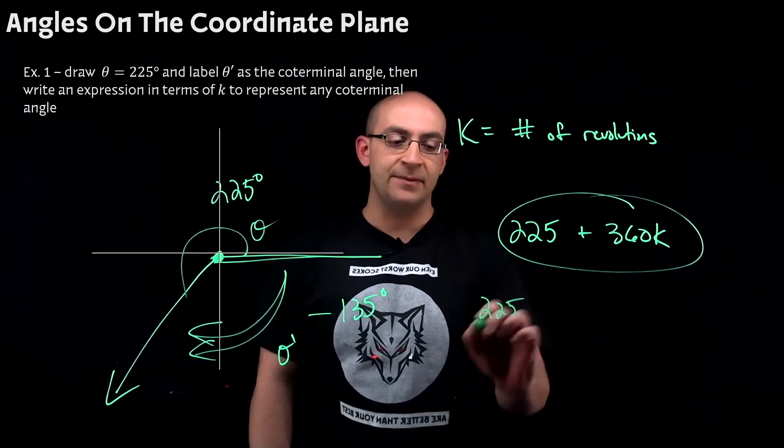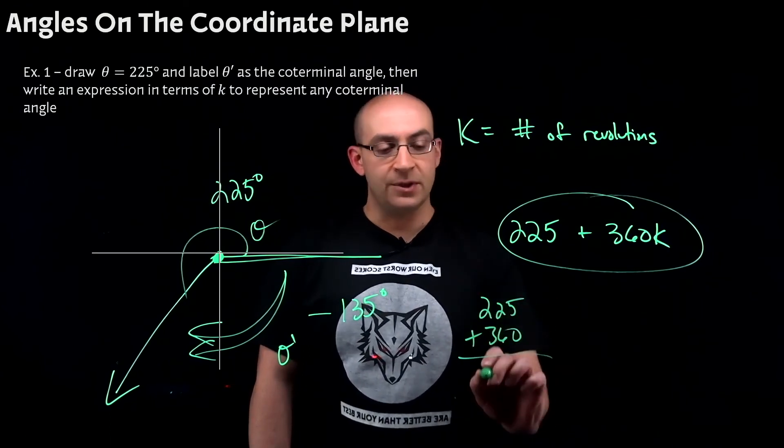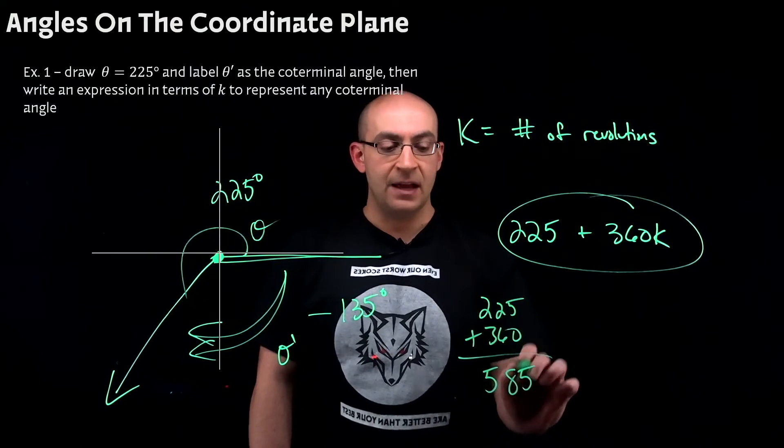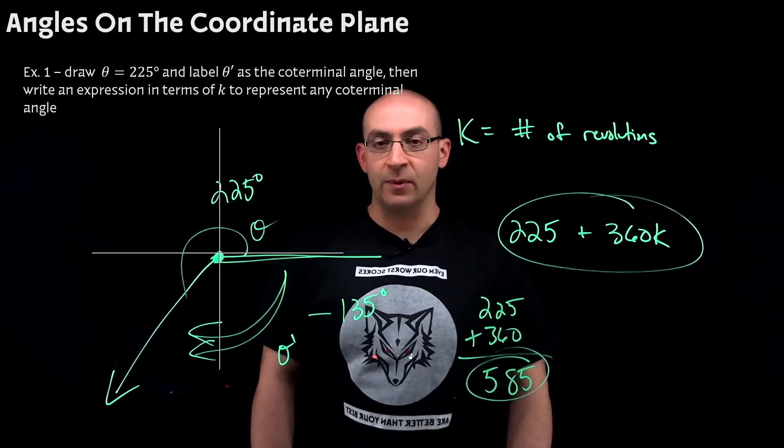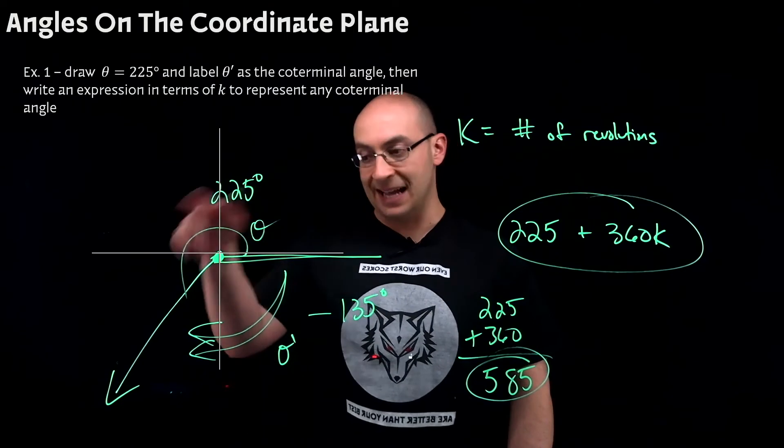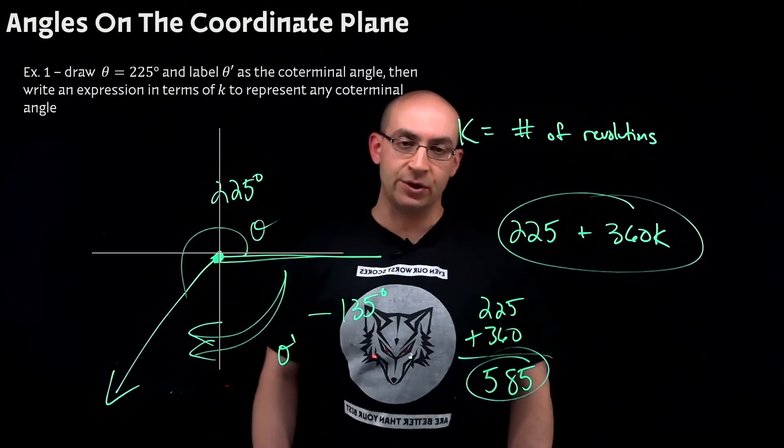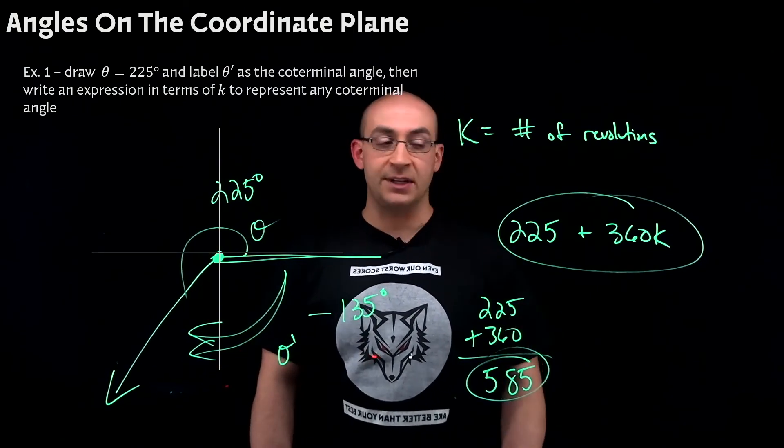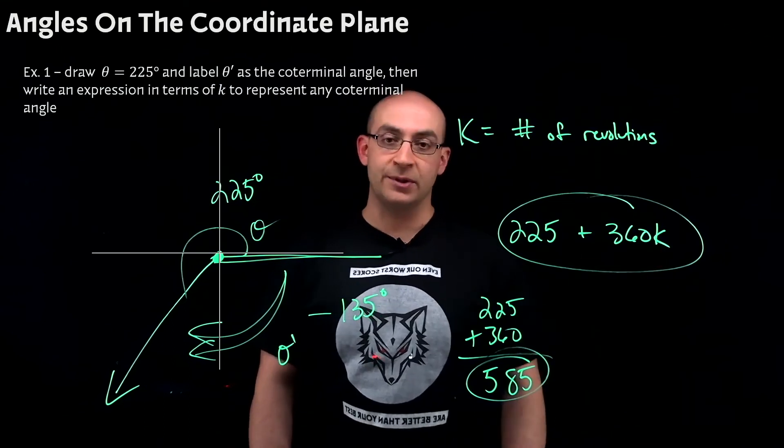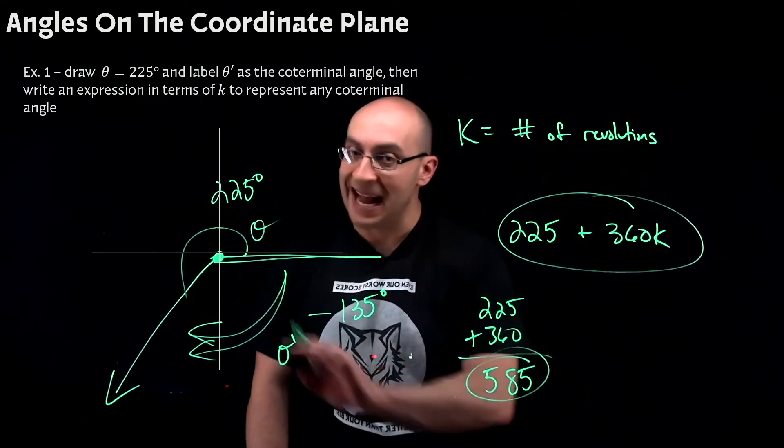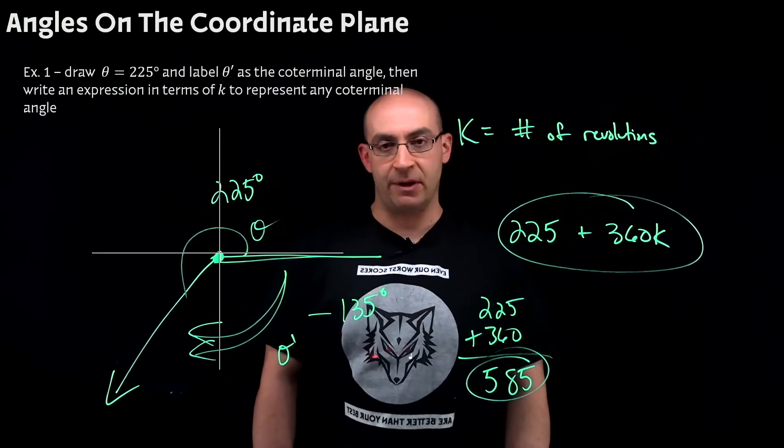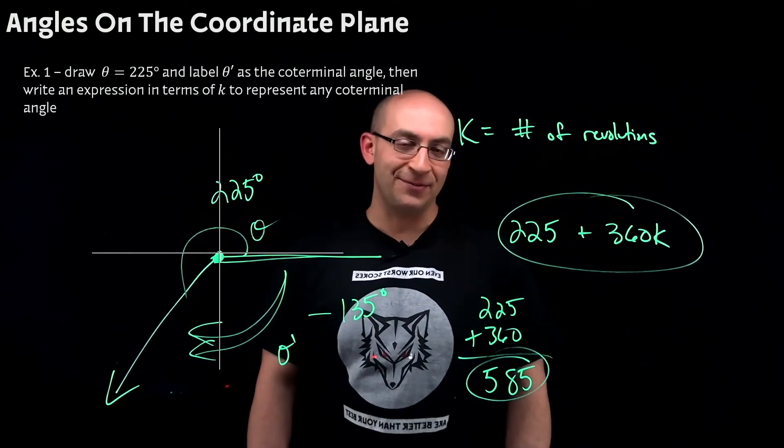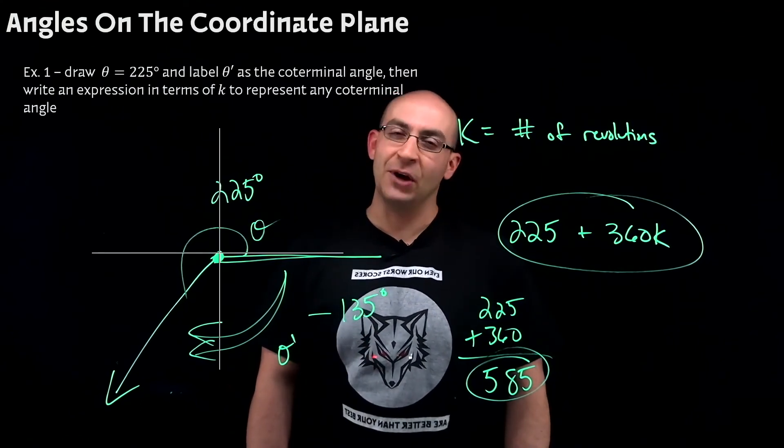So, we would have 225 plus 360, which gives us 585. That would also be a coterminal point if I was coming around again to the other side, meaning one more revolution. I could also subtract 360 if I went negative one revolutions, meaning the other way, or negative. And then I could do 225 minus 360 and get our negative 135 like we got before. Moving on.